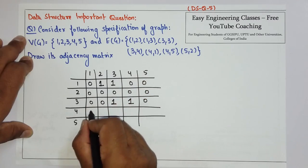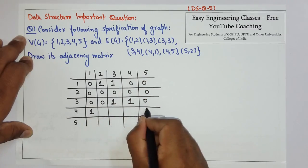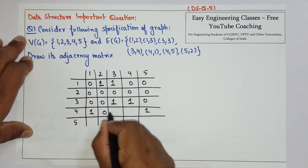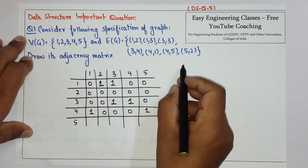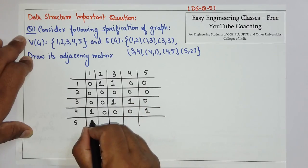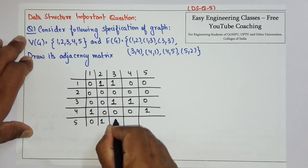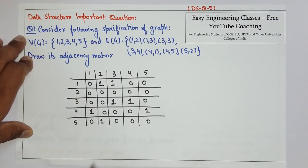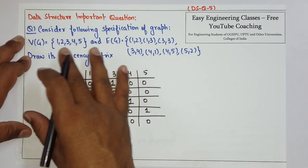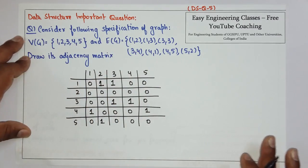Then from 4 we have edges to 1 and 5. Similarly from 5 to 2. So this is the adjacency matrix from these vertices and edges.